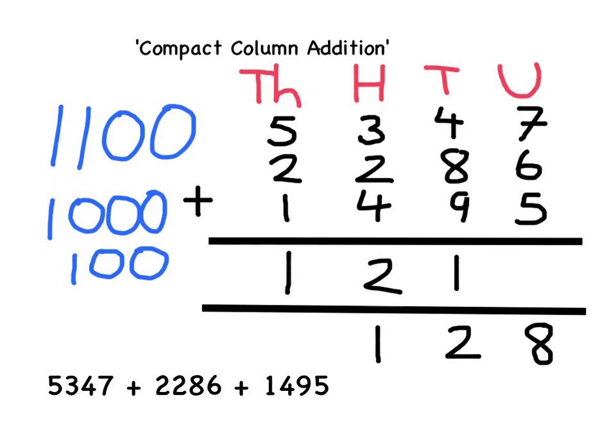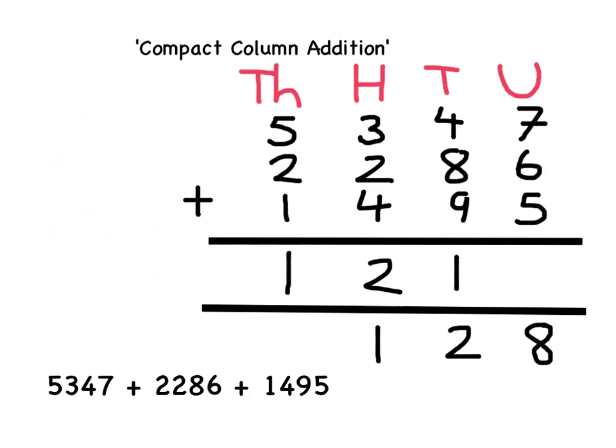Finally, I've got to add up all the thousands: 5,000 add 2,000 add 1,000 add 1,000. This gives us 9,000, so I just write a 9 here. We now have our answer at the bottom of the Compact Column Addition: 9,128. But I must remember to write that out as part of the addition.